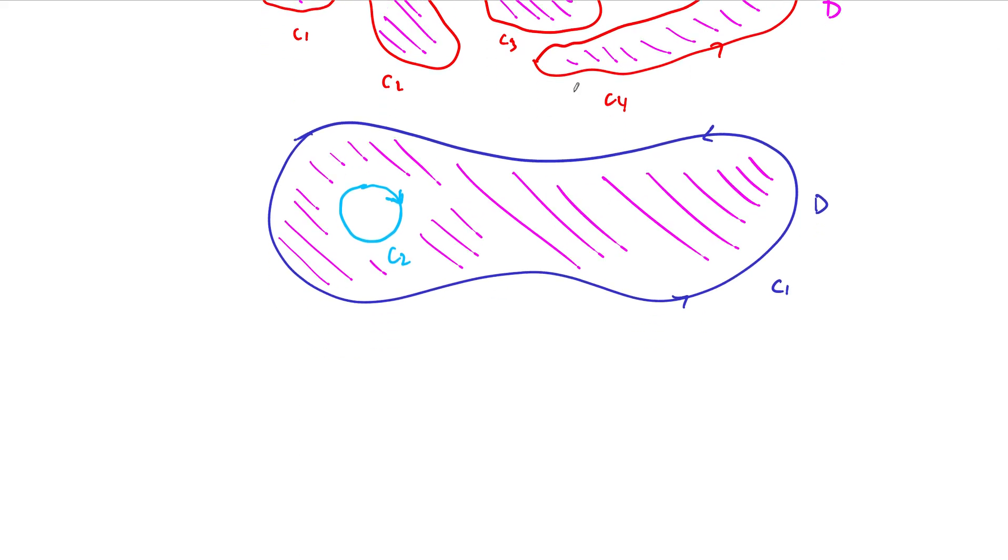And so, it turns out that Green's Theorem applies to this region. This region is no longer simply connected. Simply connected means that the region doesn't have any holes, but I, like, explicitly put a hole in here, right? So how are we going to do this? I claim that Green's Theorem is going to apply to this region, and I'm not going to write a proof, but I will kind of give the idea here.